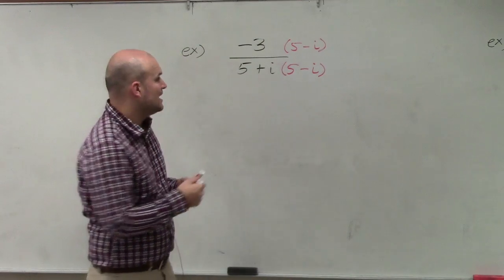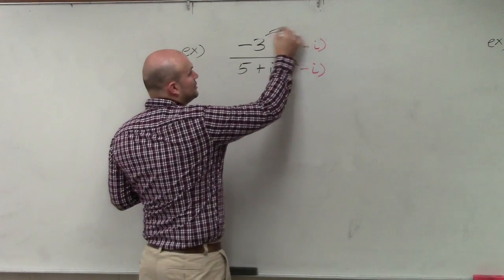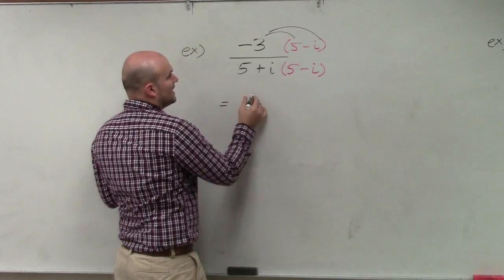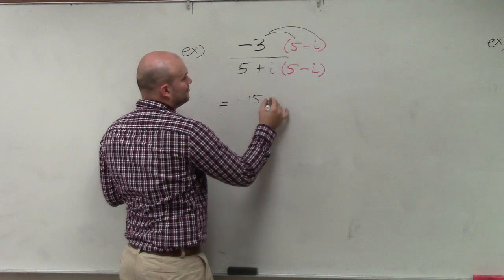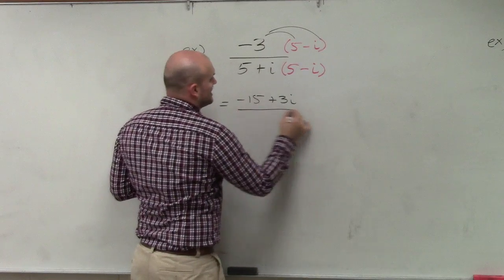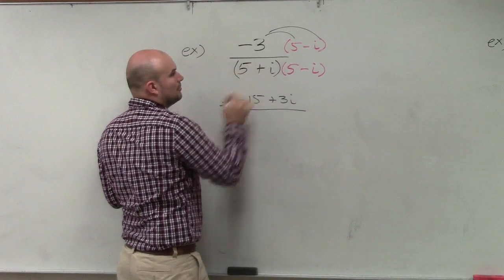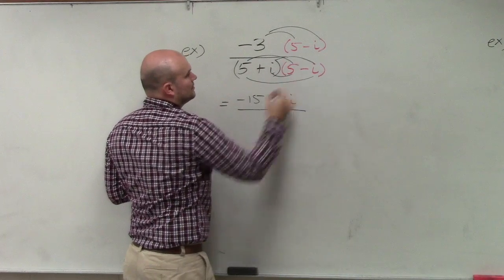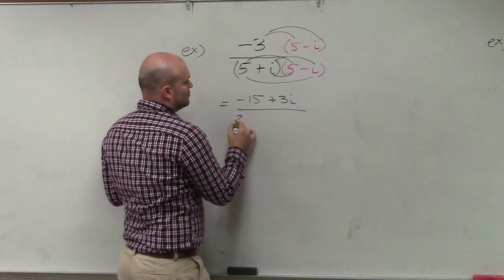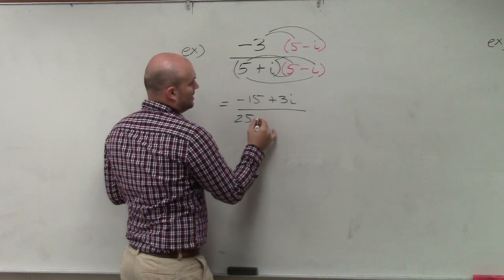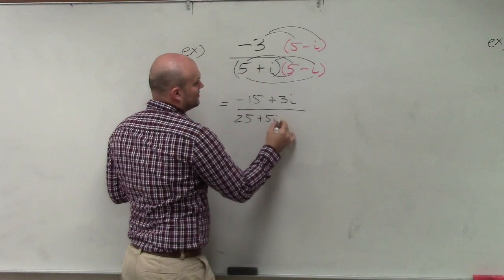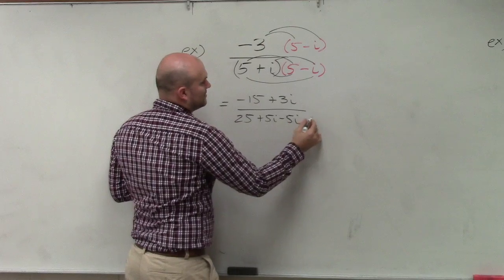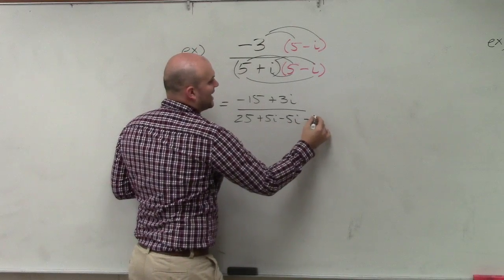So now I apply distributive property in the numerator, and I get negative 15 plus 3i. In my denominator, I'll put parentheses around this so I remind myself to apply foil. And then I'm going to get 25 plus 5i minus 5i minus i squared.